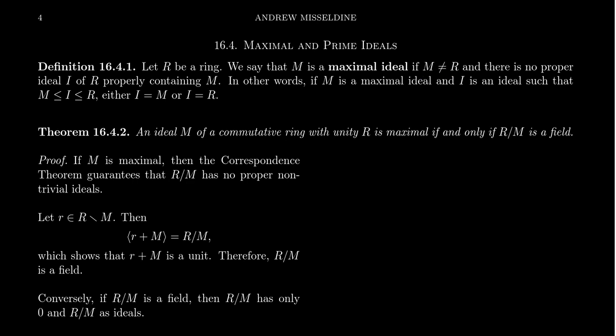But the term maximal here suggests that also there's no proper ideal I that properly contains M. In other words, if M is a maximal ideal and I is any other ideal that's sandwiched between the maximal ideal and the whole ring, then it must be that this ideal I is either M or it's R. There's nothing in the middle. In other words, there's no ideal between the maximal ideal and the whole ring.